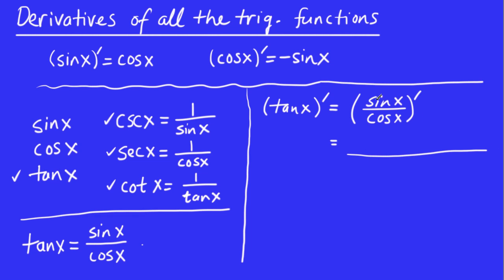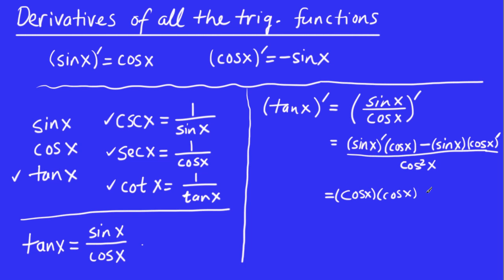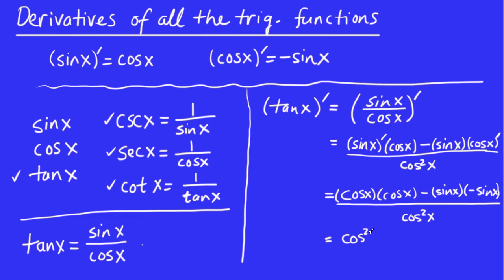The quotient rule says: derivative of the numerator times the denominator left alone, minus the numerator left alone times the derivative of the denominator, all over the denominator squared. The derivative of sin x is cos x, times cos x, minus sin x times the derivative of cos x which is minus sin x. Simplifying: cos times cos is cos squared x, and the two negatives give a plus, so sine times sine is sine squared x, all over cos squared x.